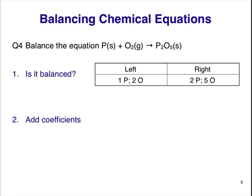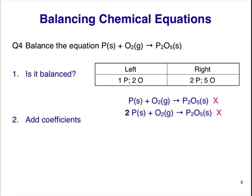To balance the equation, we'll insert coefficients. We can insert coefficients before any substance in the equation. Starting on the left side with the P atoms, I can see I have one P on the left and two on the right. So I'll insert a coefficient of 2 before the P on the left to balance the P atoms. Now we can look at the O. I've got two O atoms on the left and five on the right. To turn two into five, I multiply by five over two, or 2.5. So I'll insert a coefficient of 2.5 before the O2 molecule on the left. A quick count tells me I've now balanced this equation.